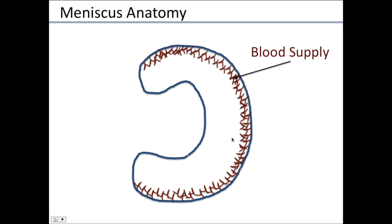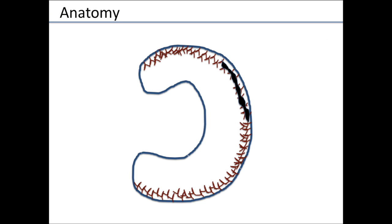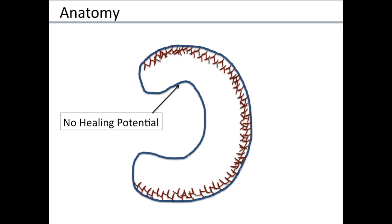One of the most important things to understand about meniscus anatomy is its blood supply. The blood supply is all along the peripheral 10% to 30% of the meniscus, and that's very important because this is where the healing potential is. So if someone were to have a tear along that peripheral 10% to 30%, there's blood supply there so that if we were to sew it up and fix it, it could possibly heal.